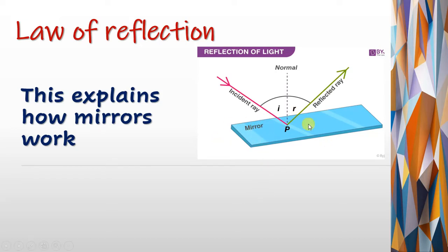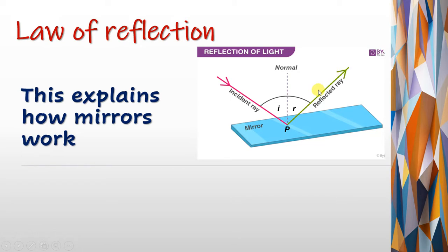This is a plane mirror, and this is the surface of the plane mirror. This is a source of light — any source of light, natural or artificial, as we took before. When the source of light falls on the surface of the mirror, this ray is called the incident ray. From the other side, this is called the reflected ray, which reflects the light from the surface of the mirror to our eyes.